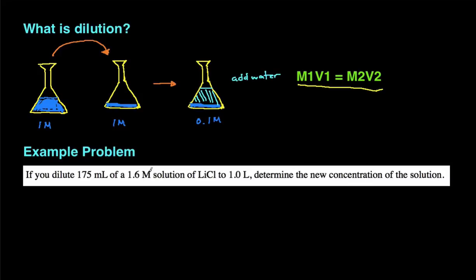So since we know we're working with dilution, we're going to start off with the equation M1V1 equals M2V2. M1V1 is the molarity and the volume of the original concentration and then M2V2 is the molarity and volume of the new concentration. So let's see what we have.